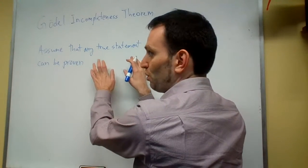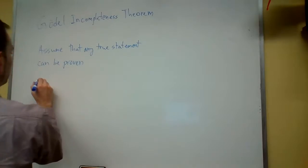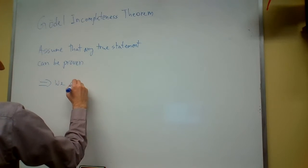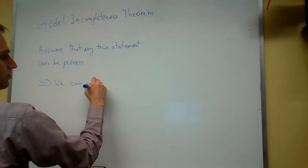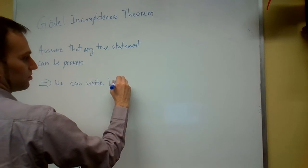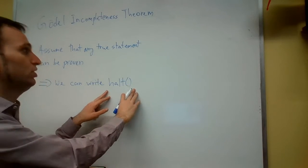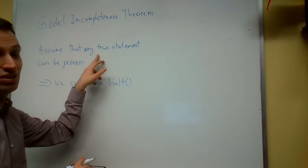Now here is what we will deduce from it: we will deduce that we can write halt. But we cannot write halt—we just proved that—which means that this assumption must be false.